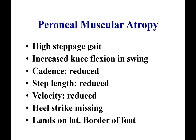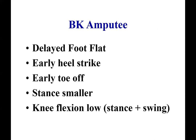In peroneal muscular atrophy, dorsiflexor and evertor weakness is present. If the proximal muscles — hip and knee — are better, hip flexion compensates to prevent toe drag, producing a high steppage gait. Increased knee flexion during swing phase helps clear the ground. Cadence, step length, and velocity are reduced. Heel strike is missing because the patient initially lands on the lateral border of the foot or later only on the toes.